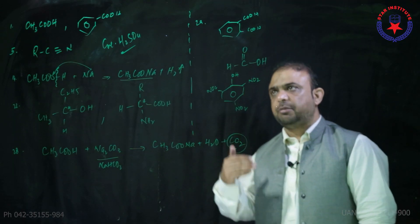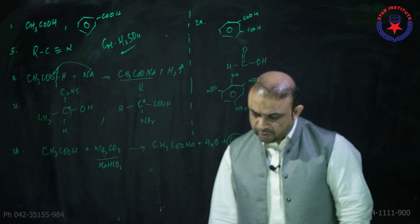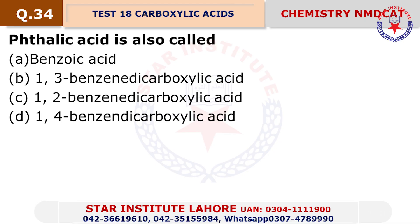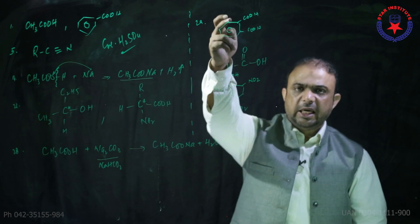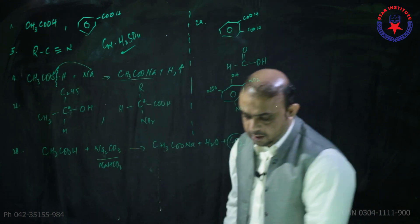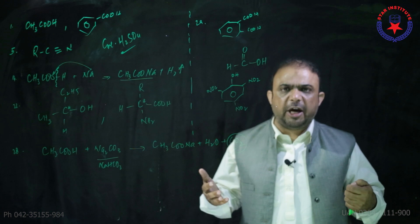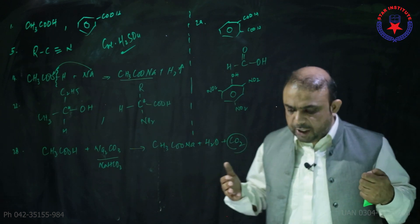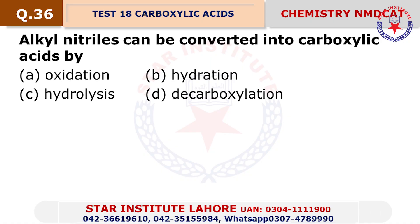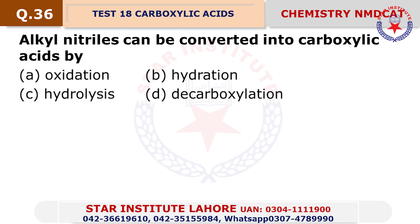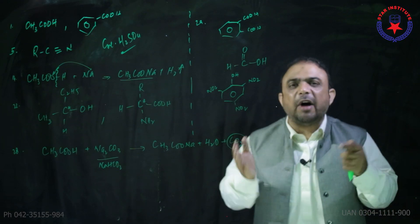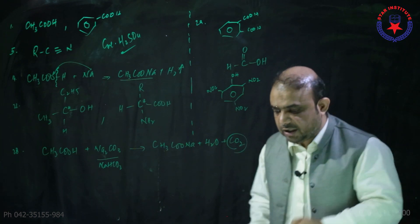Question number 33: Fatty acids are aliphatic monocarboxylic acids — basically the digestion products. Question number 34: Phthalic acid is also called 1,2-benzene dicarboxylic acid — choice charlie. Question number 35: The carboxylic acid obtained by distillation of red ants is formic acid — choice beta. Question number 36: Alkyl nitriles can be converted into carboxylic acids by hydrolysis — acid hydrolysis.